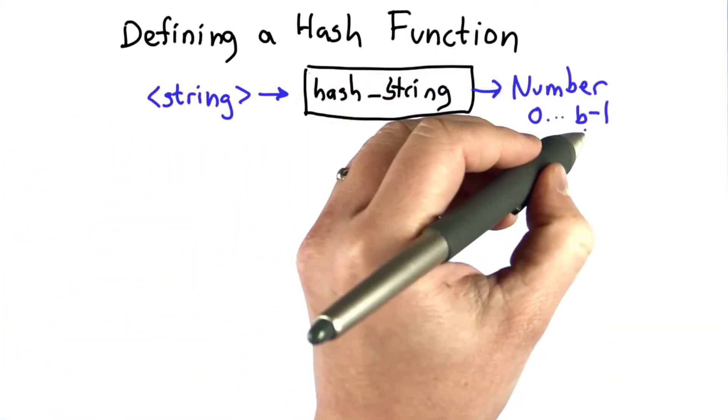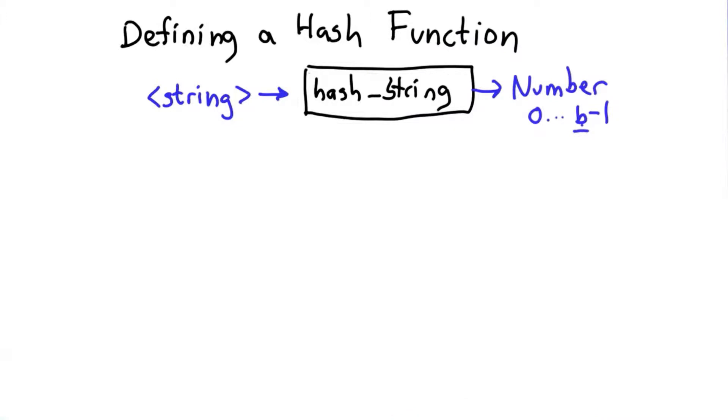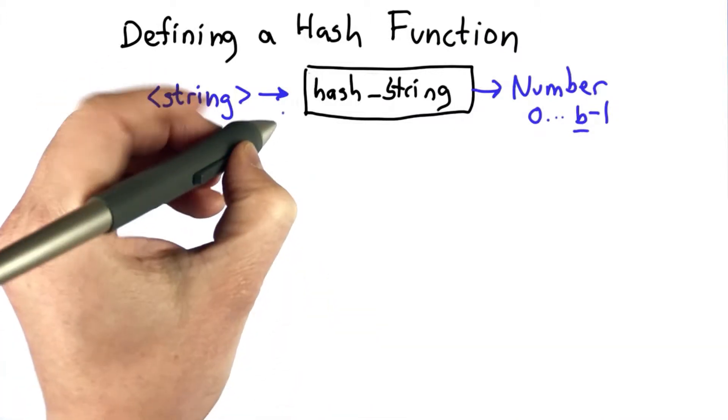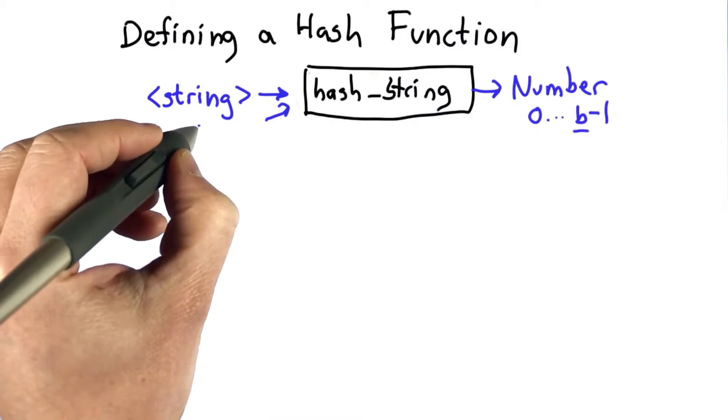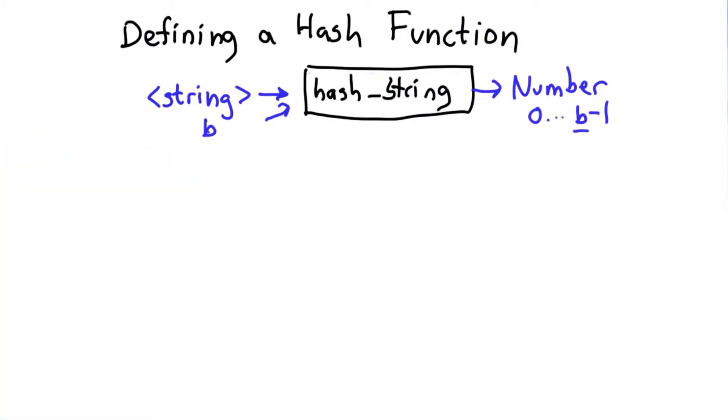So we also need another input to our hash_string, which is going to be the size of the hash table. So that'll be the second input, the size of the hash table, the number of buckets.